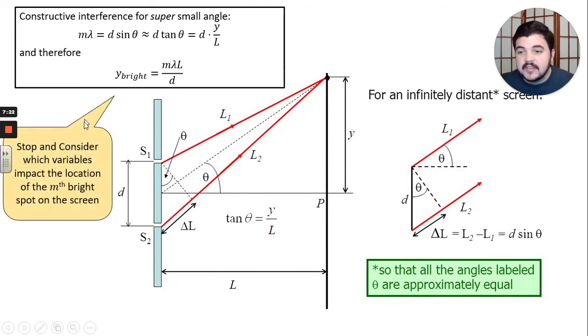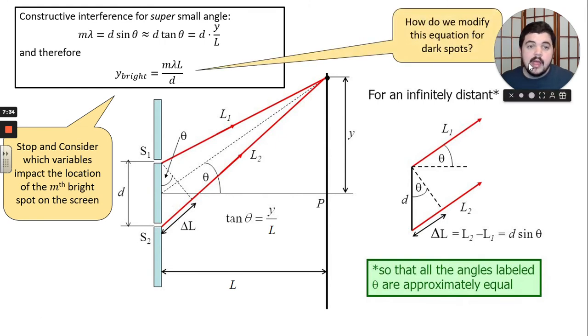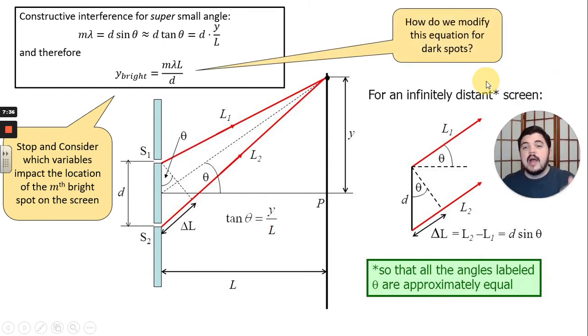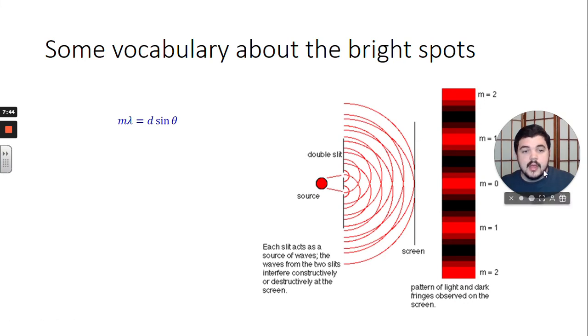With that derivation, let's look at this some more. We want to stop and consider, we just did that, but think on your own, which variables impact the location of bright spot number m on our screen? And then make sure we know how do we modify this equation for dark spot. It's not m anymore, it's m plus a half.